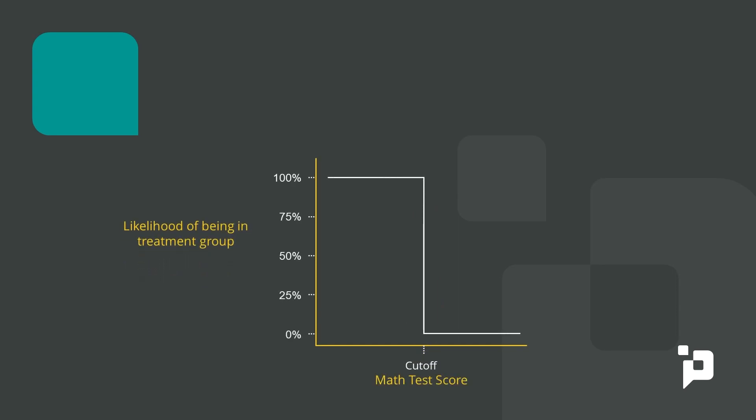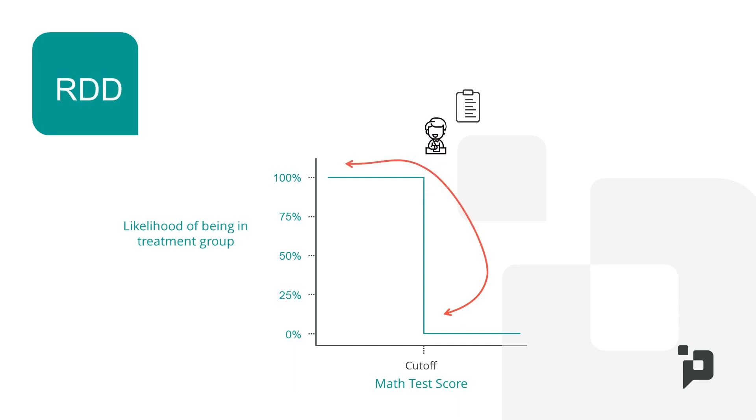The estimate of the effect of the treatment is really depending on the students or the people that are just around that cutoff. Because of this fact, you should use a regression discontinuity design when the treatment assignment is based on a single continuous variable, like students who are assigned to a math intervention if they score below a particular number on a math assessment in the fall.